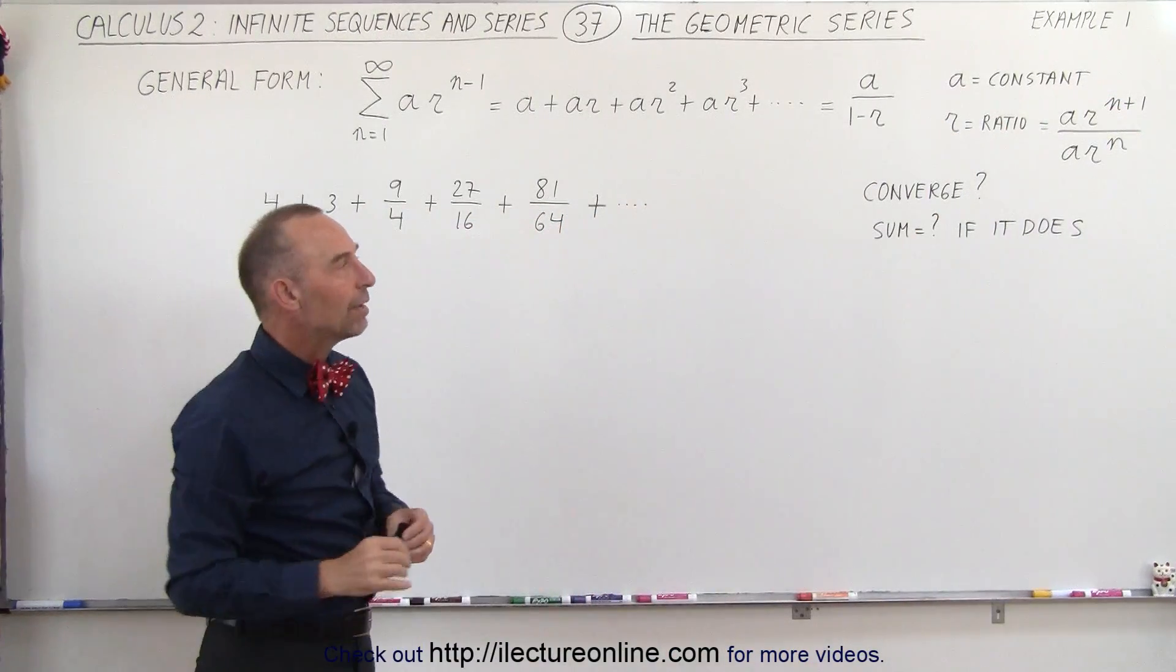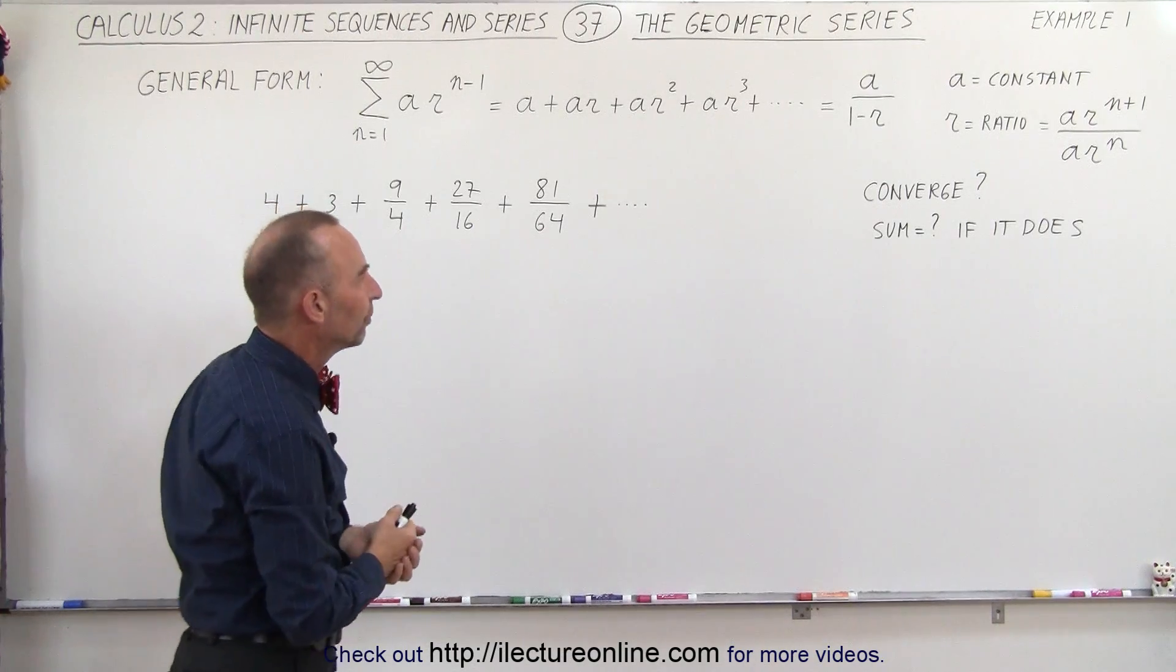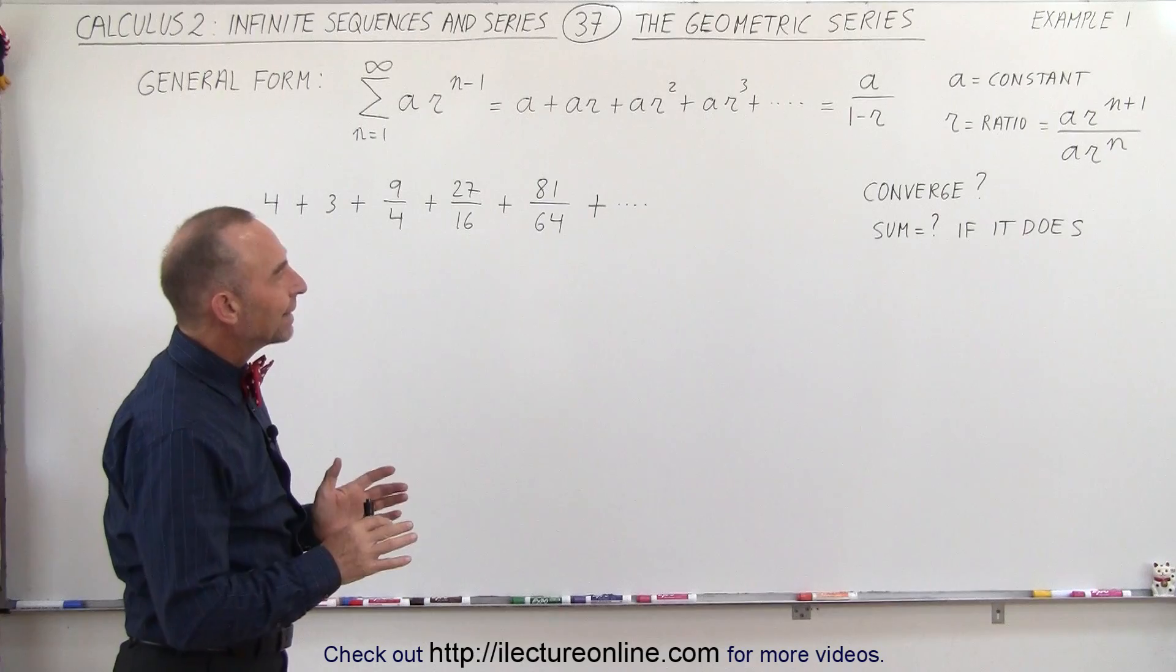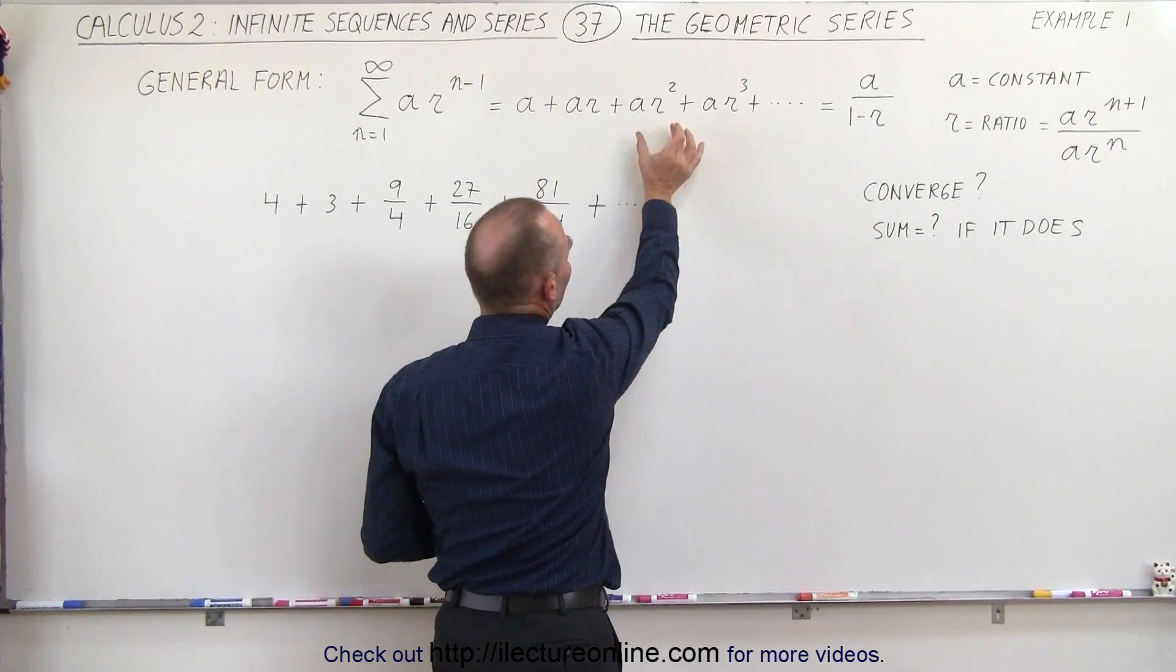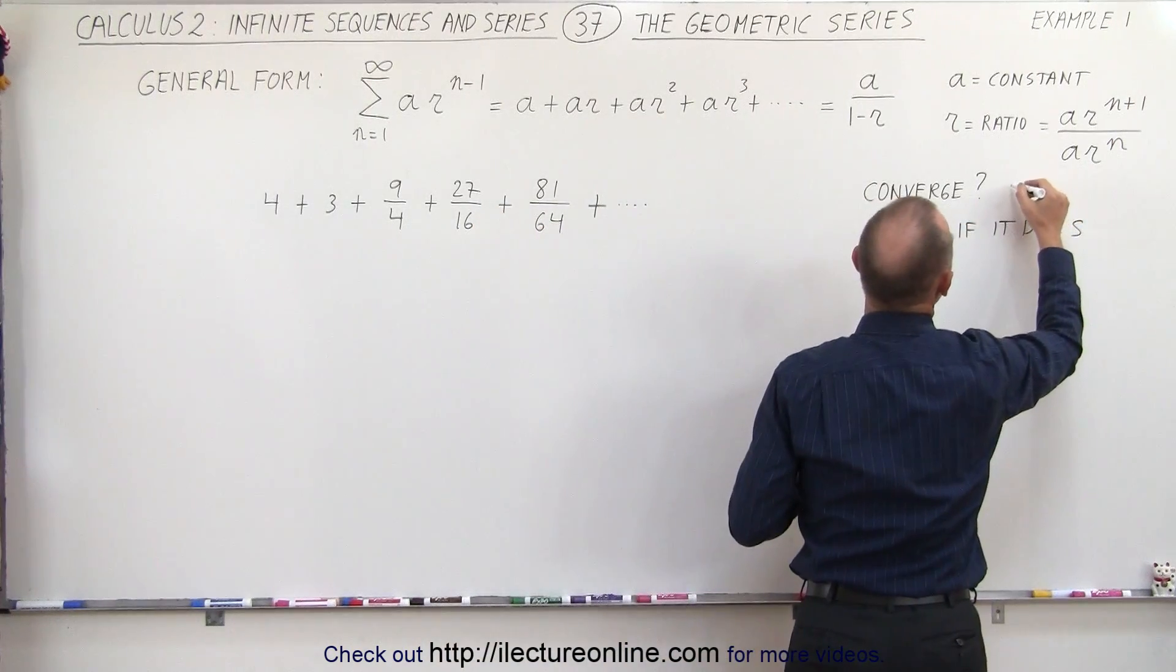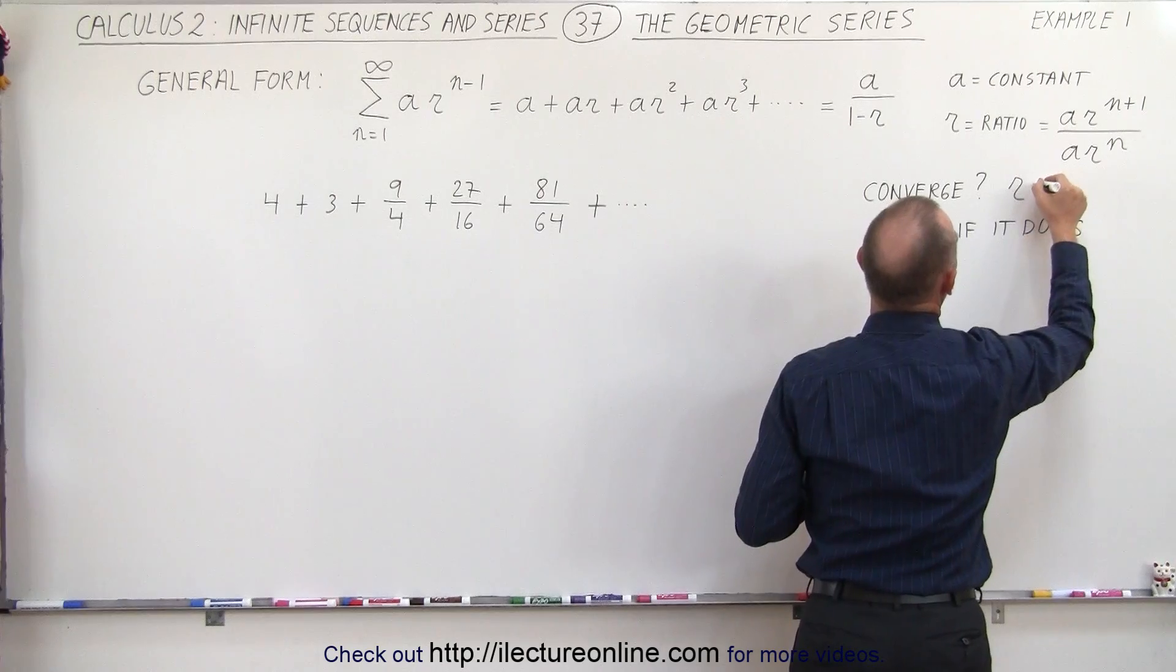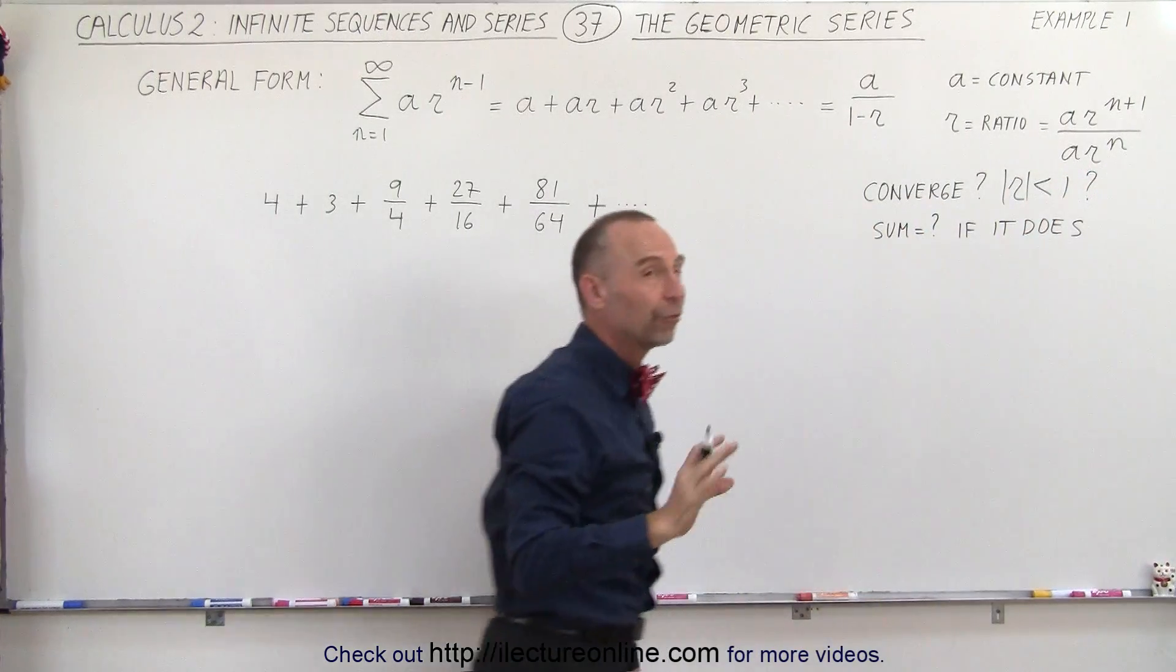So how do we know if it converges and what is the sum if it does? We know that the geometric series converges if the absolute value of r is less than 1. So the test is going to be, is the absolute value of r less than 1? So that's the first thing.